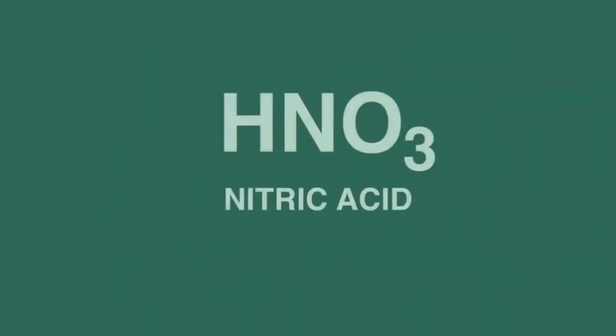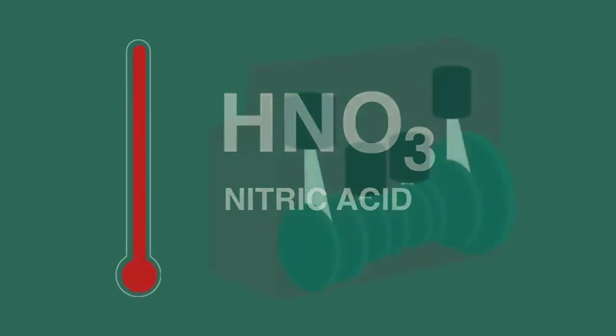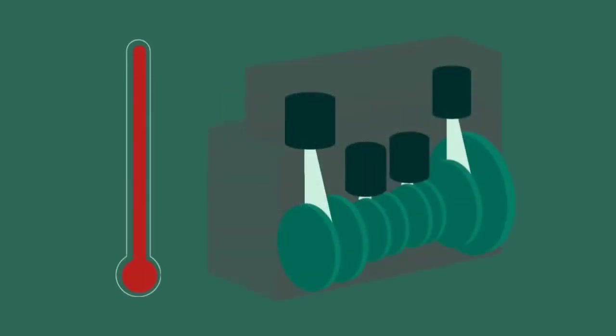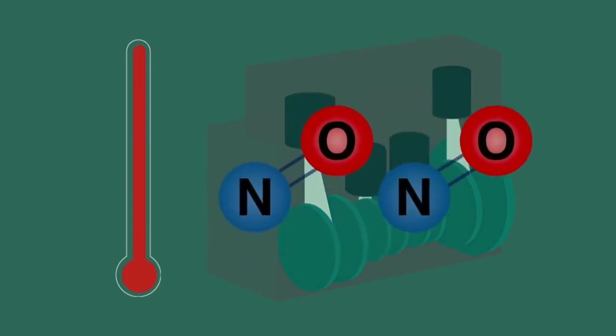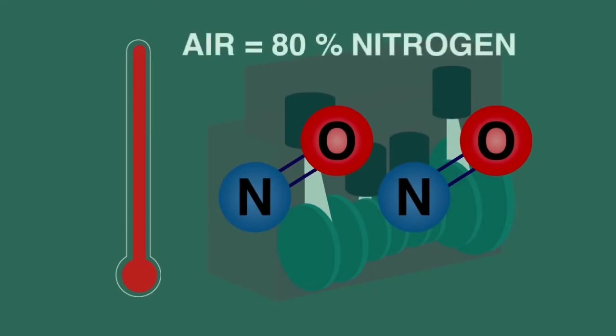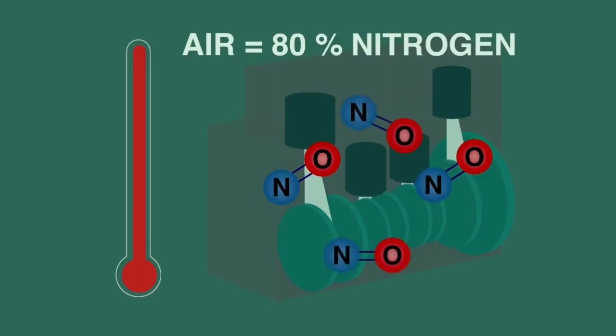Let's now consider how nitric acid gets into the rain. In the high temperature conditions in the cylinders of our motor vehicles, a small amount of nitrogen and oxygen from the air can react. Remember that air taken in to combust the fuel is nearly 80% nitrogen, so exhaust gases from vehicles contain small but significant amounts of nitrogen oxides.